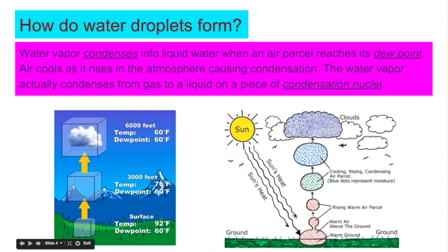The sun heats the surface of the Earth. The surface of the Earth warms the air. The air that is warm rises, and as it rises, condensation takes place to form clouds and ultimately precipitation.